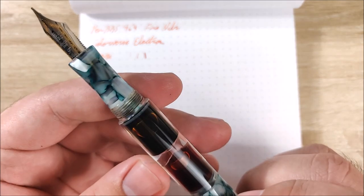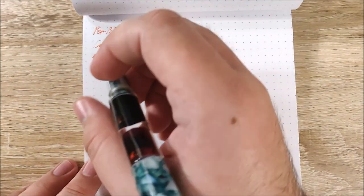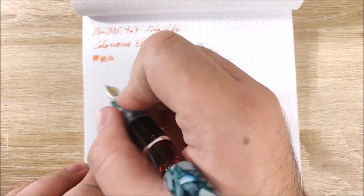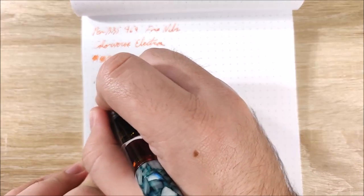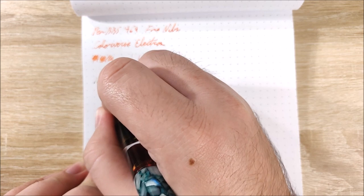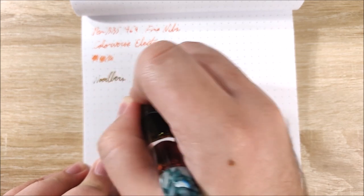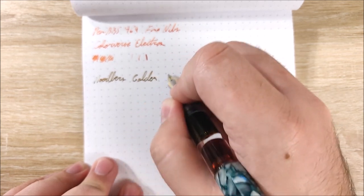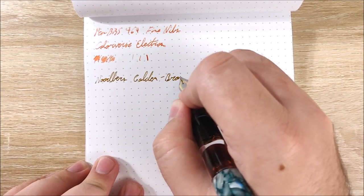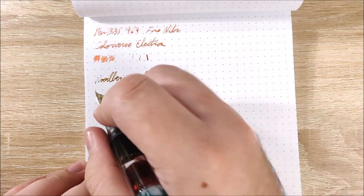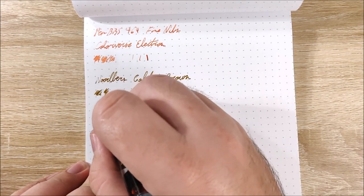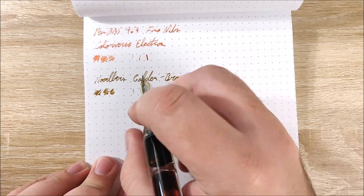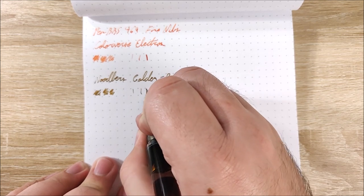On to the two tone, and I believe this is Noodler's Golden Brown. I could be wrong. I had several ink samples with a similar shade in it, but I believe that's what this is. It was a bit of a skip there, but I believe that was my fault. Normal. And we want some pressure. Okay. So let's go ahead and take a look at all of this.